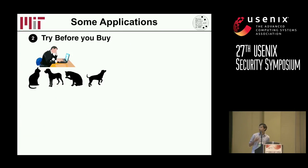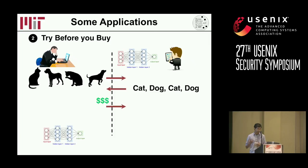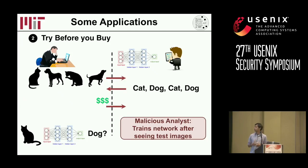Another potential use case would be if you want to try out a model before you buy it. Say you have a small set of images you're willing to test the model on — you can send them to somebody who claims to have a model for your particular task, and hopefully get back the right results. If you're satisfied, you can pay and buy the model. But once you buy the model, what guarantees it's still correct? If the person was malicious, he could manually classify the test set, or even train the model after seeing your test images.